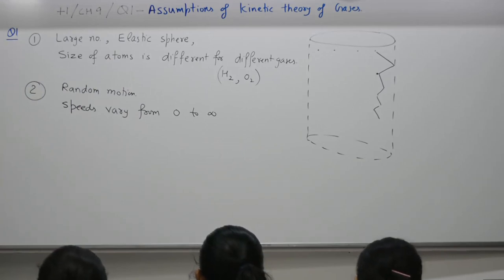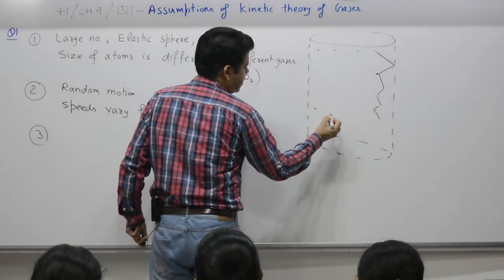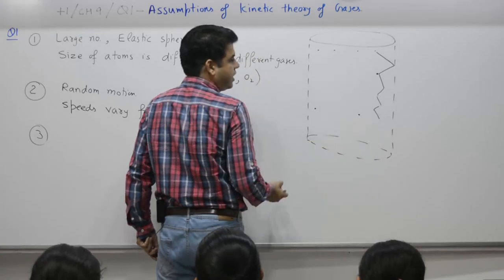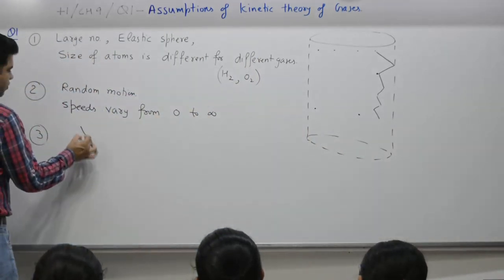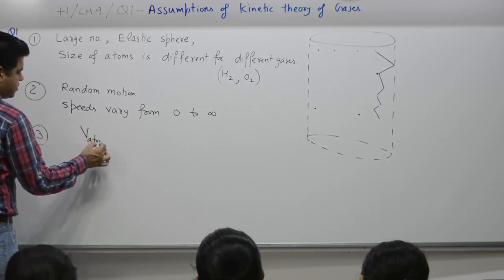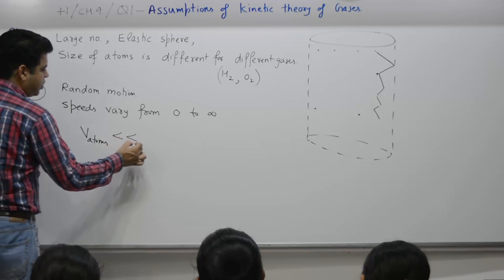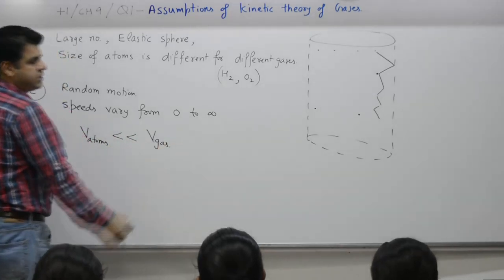Three, the size of gas molecules is very small as compared to distance between them. Means what? Size of the atom is very, very small. Distance between the two is very large. So that means what?